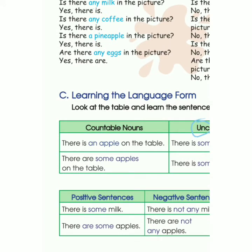Positifnya: There is some milk — ya ada. There are some apples — ya betul. Lihat ya, There is dan There are ini beda. There is digunakan untuk benda yang singular. Tapi karena milk itu tidak bisa dihitung, kita menggunakan 'is'. Untuk uncountable, kita menggunakan is.